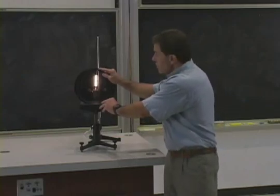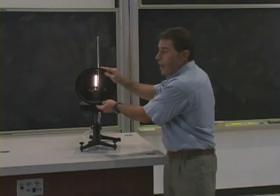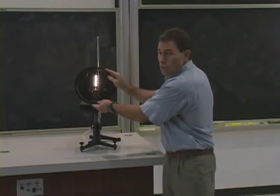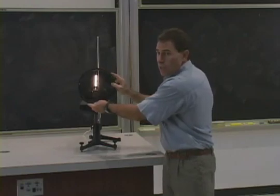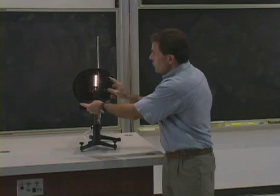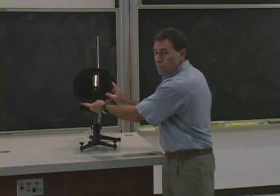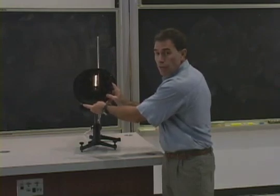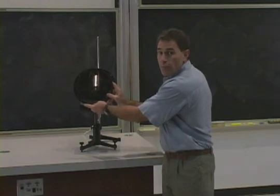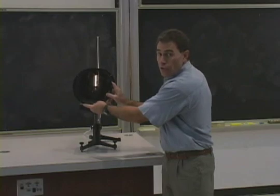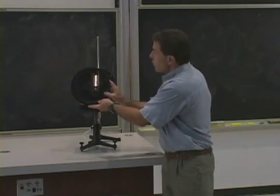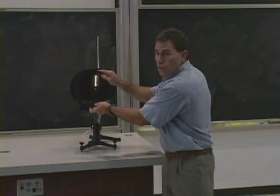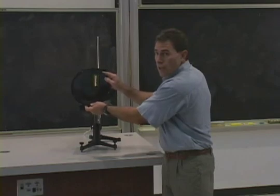The first polaroid — however, we change this angle, make it maybe about 45 degrees to the first polaroid from where we had it before — you'll see that it's less of a transmission of light from the second polaroid to you.